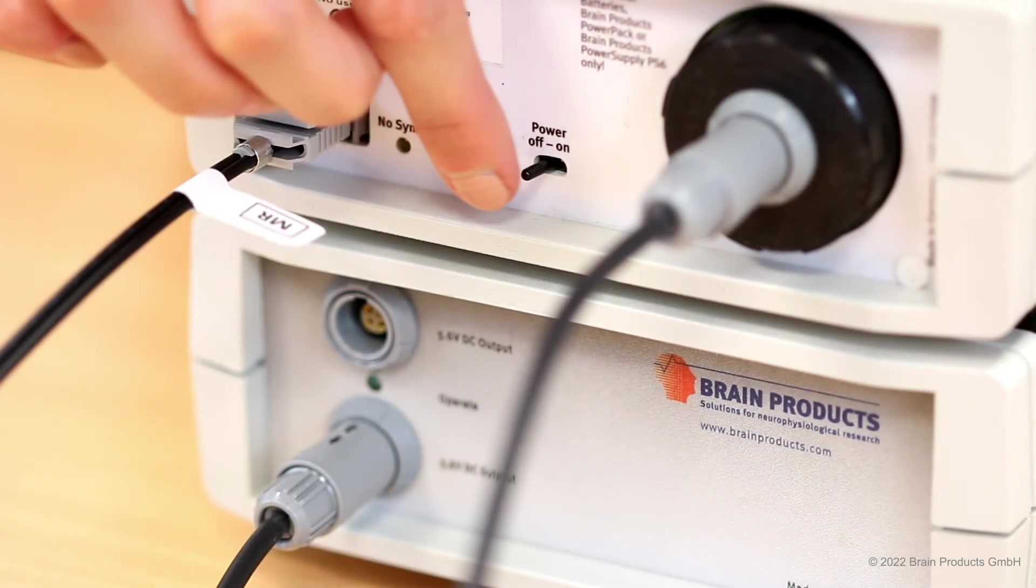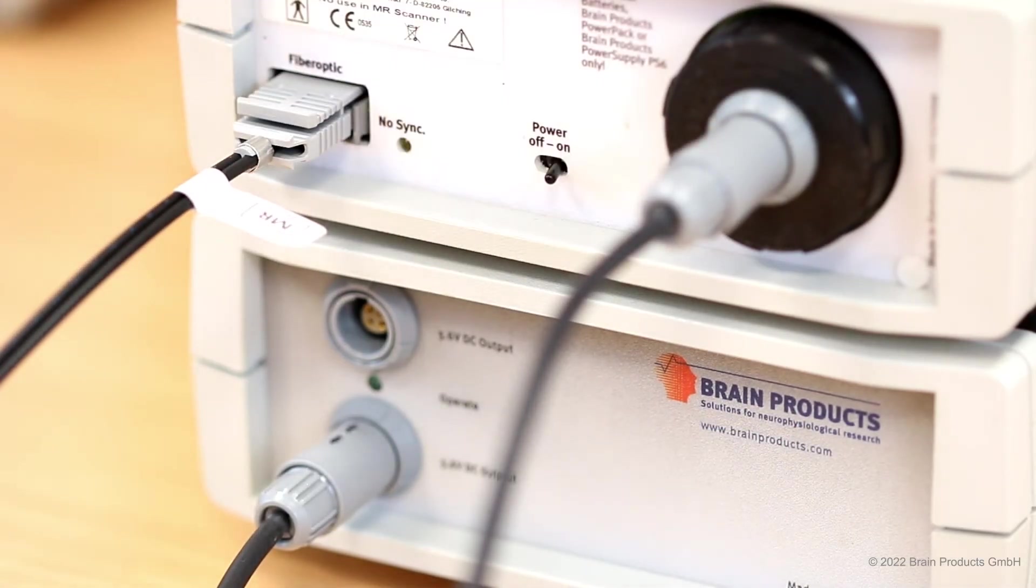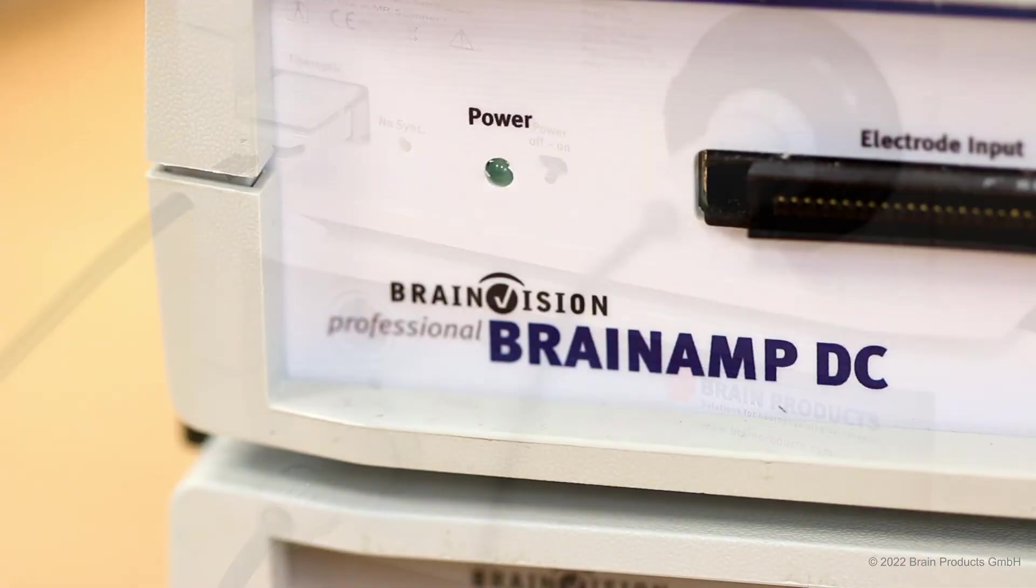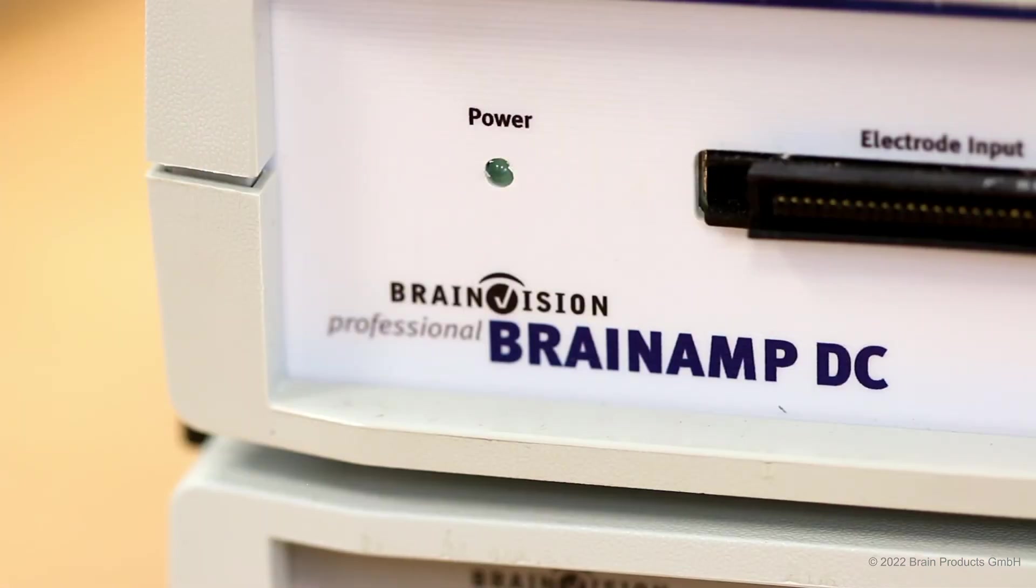Once all parts are connected, switch on the system using the power switch on the back of the amplifier. The power LED on the front of the amplifier will light up.